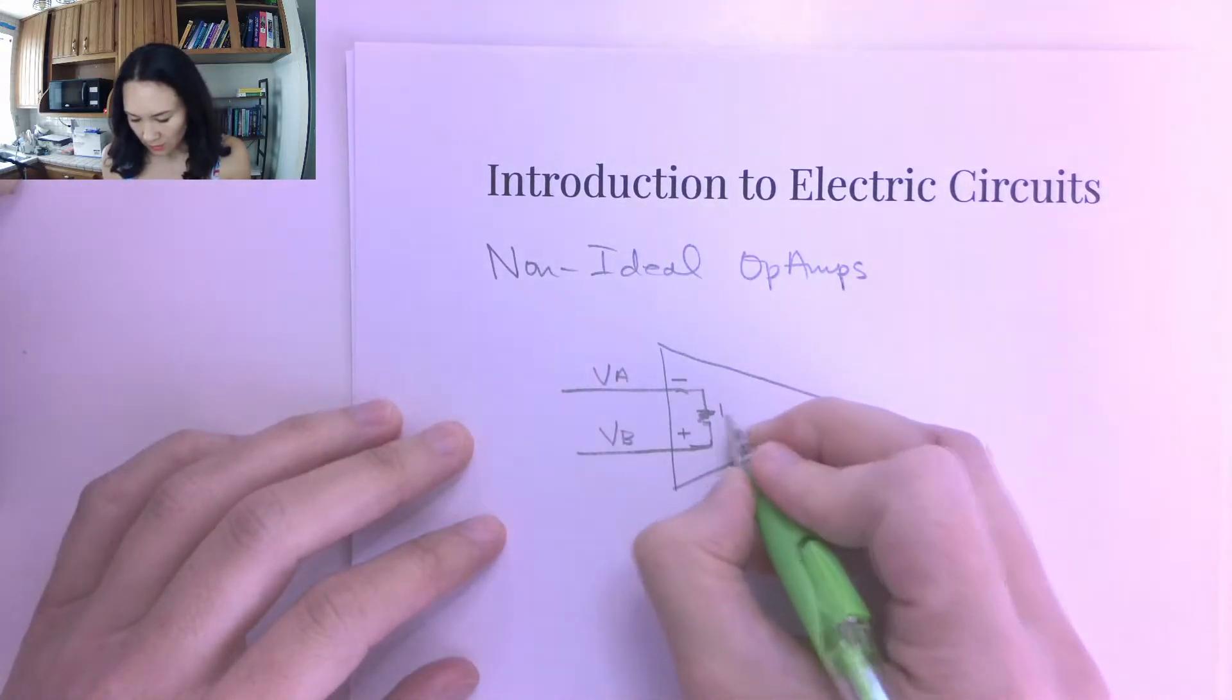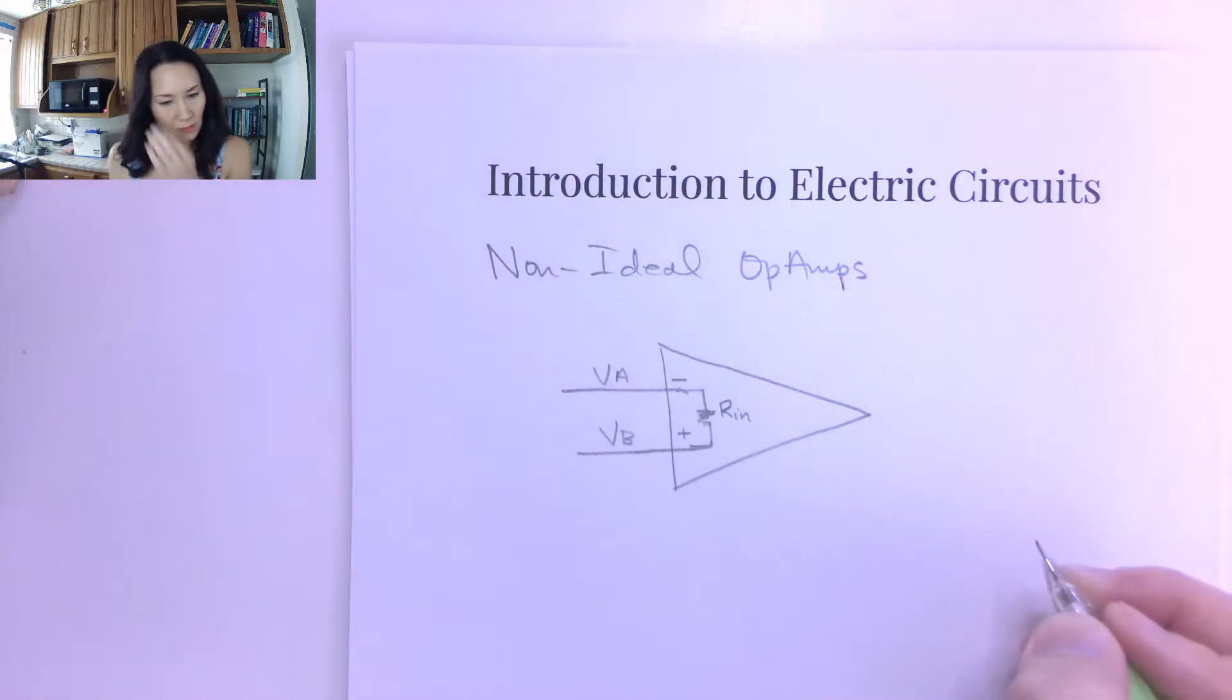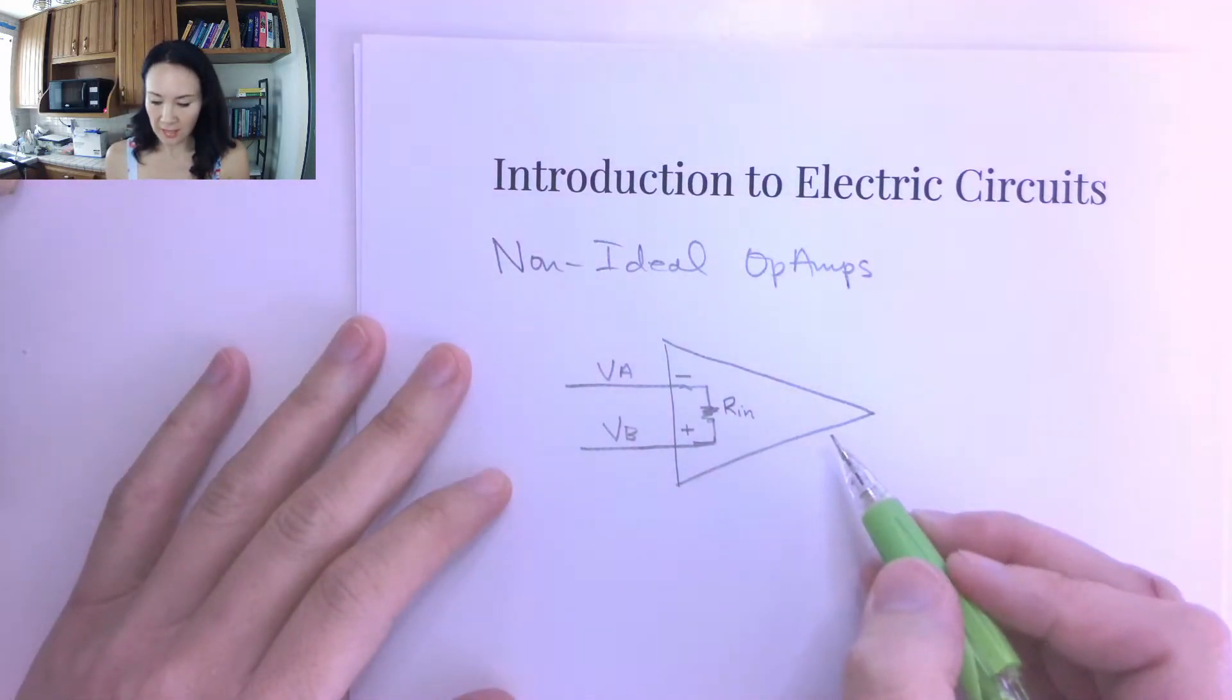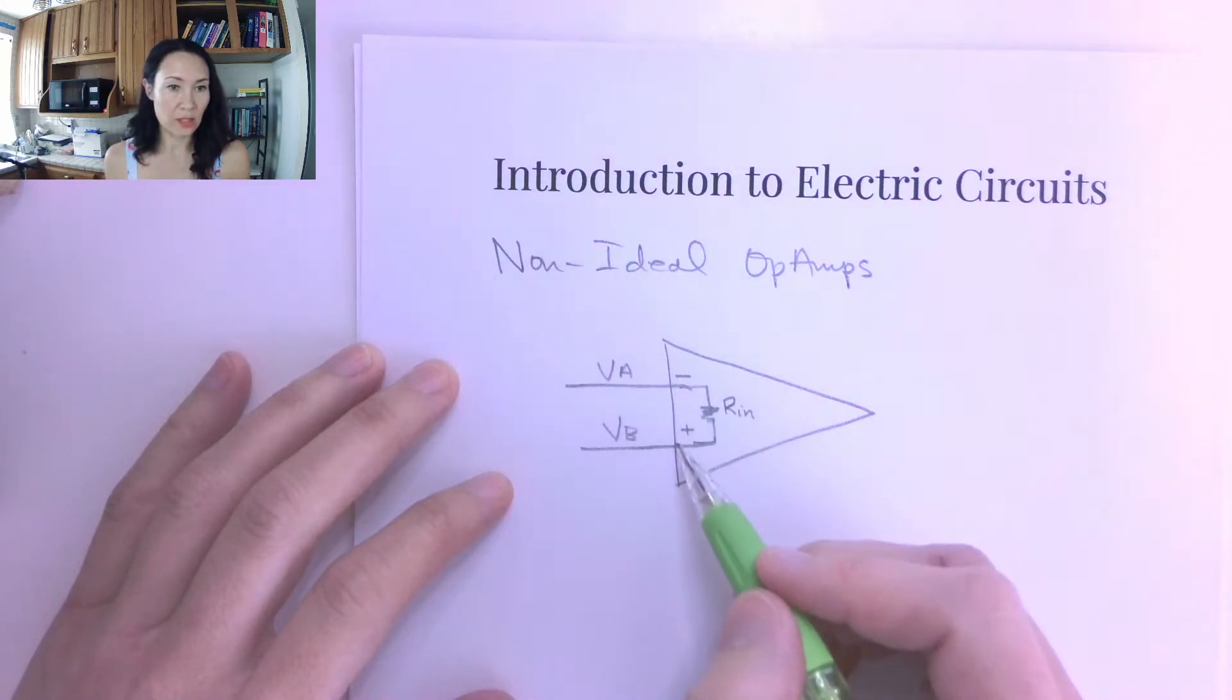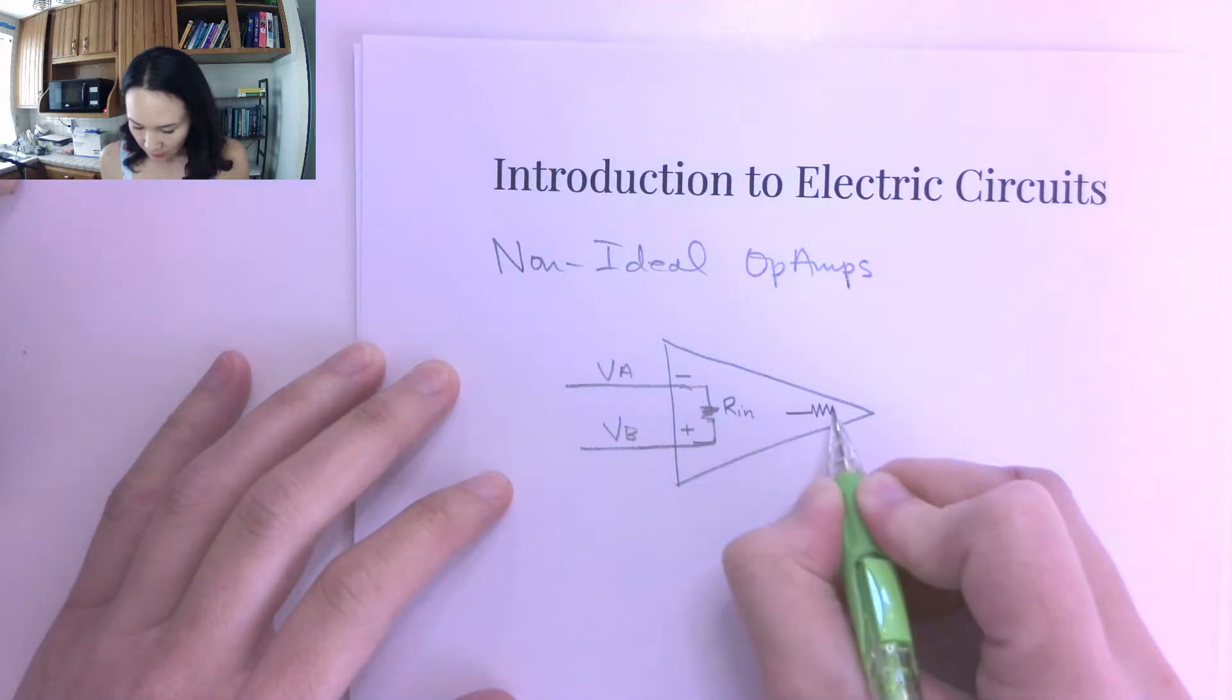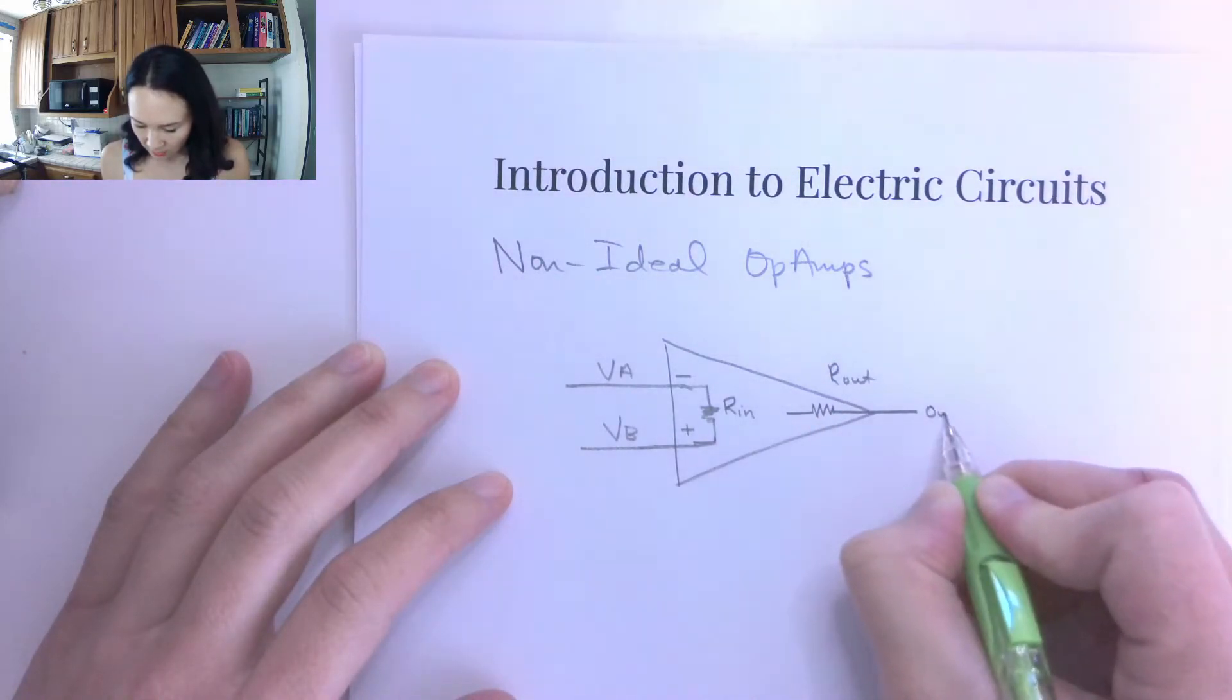So the resistor between those, I'm going to call that Rn. And then the op amp actually behaves like a dependent voltage source. And what it's dependent on is the voltage difference between these two input voltages. So there's an output resistor here, Rout. And then this is our output that comes out there.